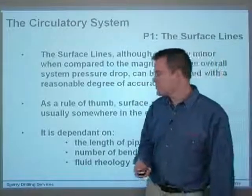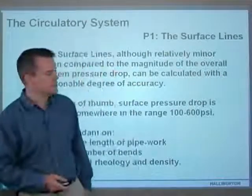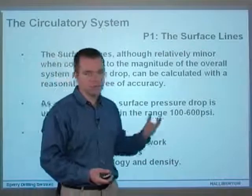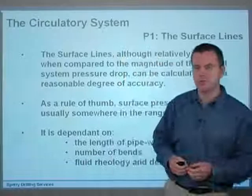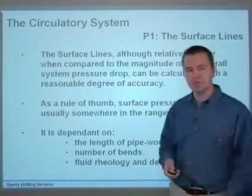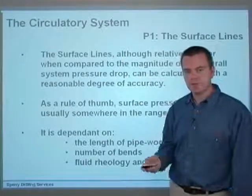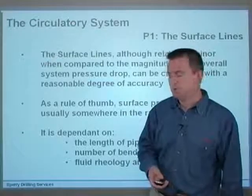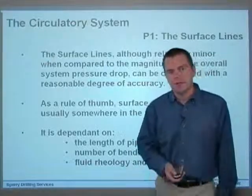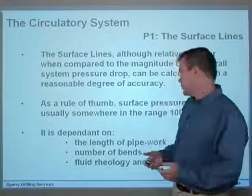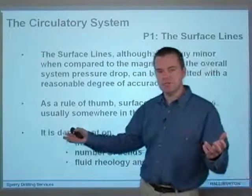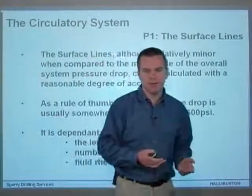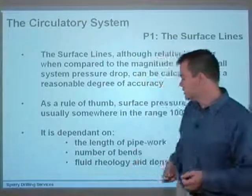Starting with the first pressure drop, P1 — the surface lines. Although they are relatively minor when compared to the magnitude of the overall system pressure drop, they can be calculated with a reasonable degree of accuracy. As a rule of thumb, the surface pressure drop is usually somewhere in the range of about 100 to 600 psi. It's dependent basically on the length of the pipework — how long the pipes are from the pumps up to the end of the standpipe — the number of bends in that pipework, and also the fluid rheology and the density.